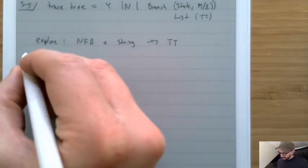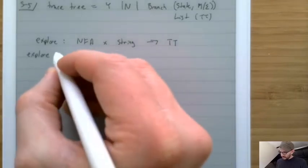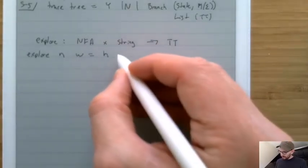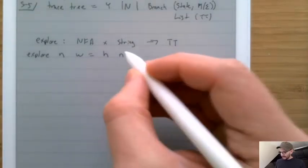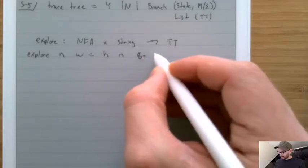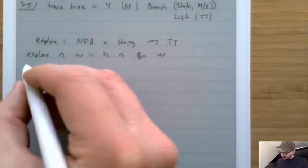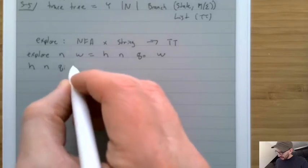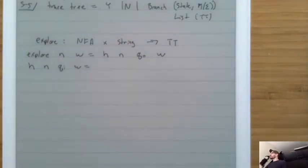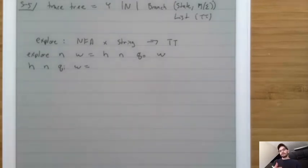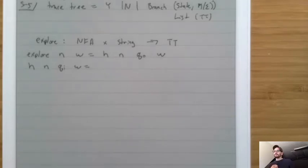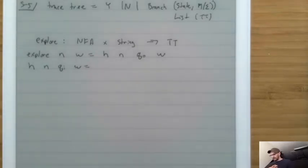Explore(N, w) calls a helper function H(N, qi, w). The helper explores all the different possibilities: what happens with an epsilon transition, and what happens when it chooses each different possible character, then combines all those together.